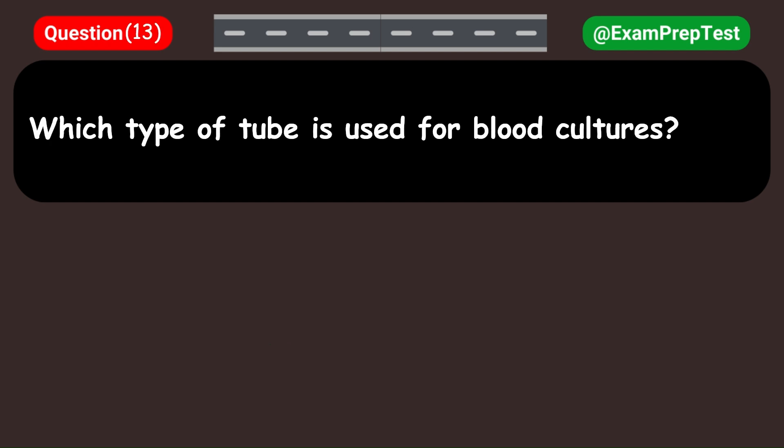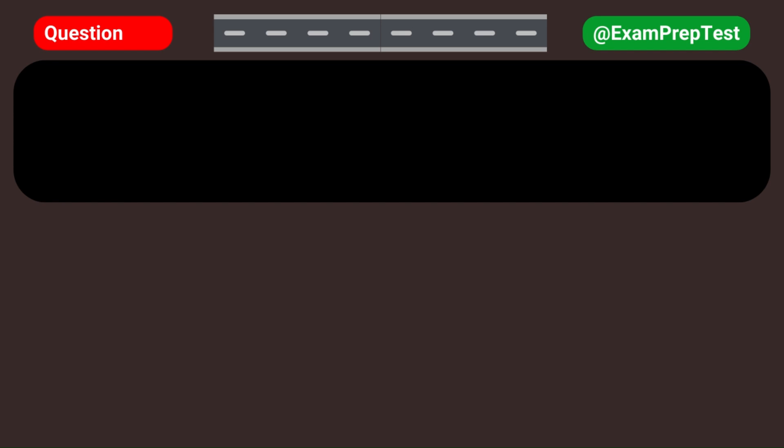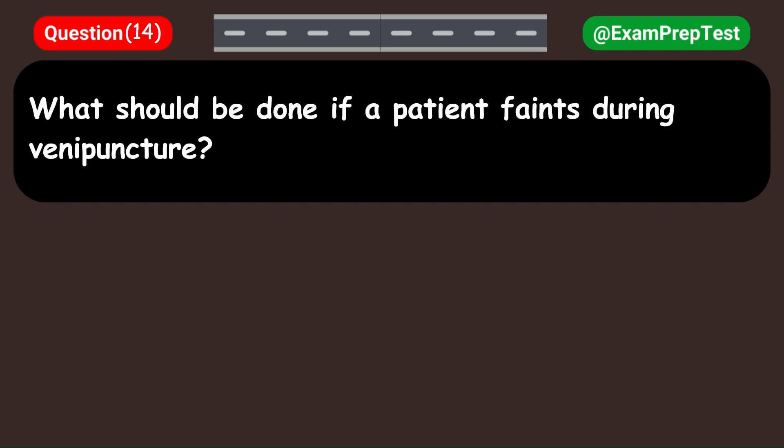Which type of tube is used for blood cultures? A. Red top. B. Yellow top. C. Green top. D. Blue top. Answer: B. Yellow top.